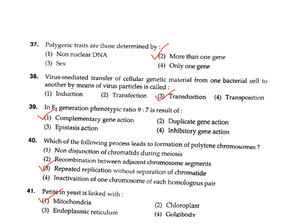Question 40: Which process leads to the formation of polytene chromosomes? Polytene chromosomes are formed when DNA replication occurs repeatedly without separation of chromatids. Correct answer Option 3 — repeated replication without separation of chromatids.